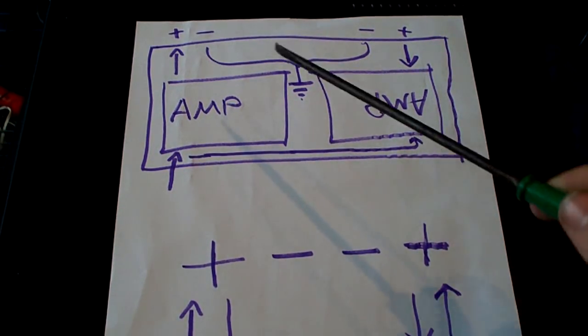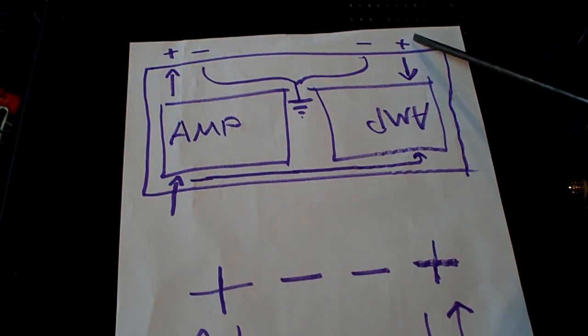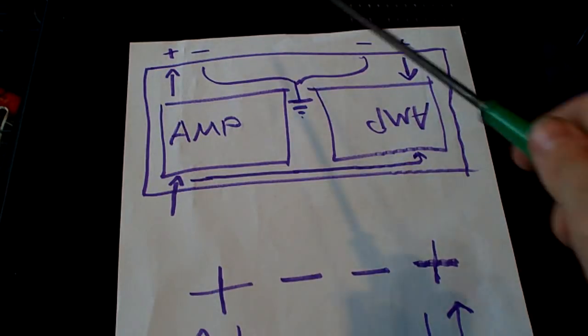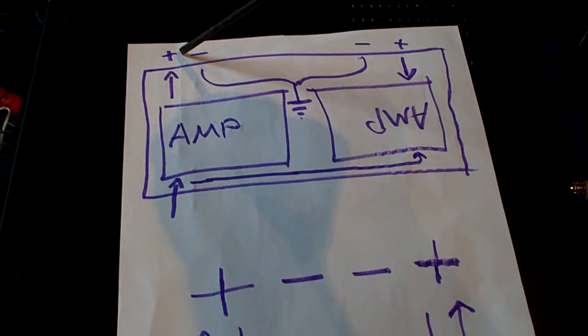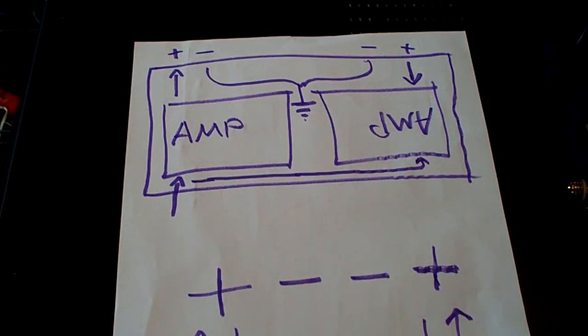So that in effect, whilst the first amplifier pushes through the plus, the second amplifier pulls through the plus. Now, in this way, this plus becomes positive and this plus becomes negative.